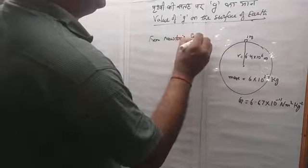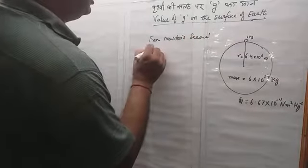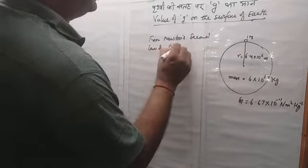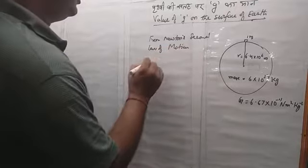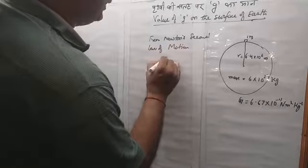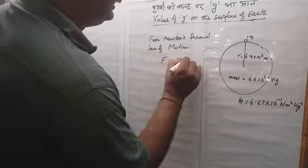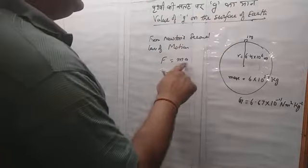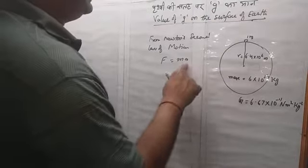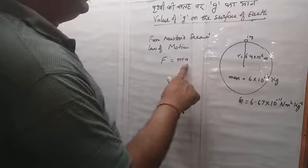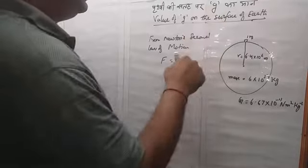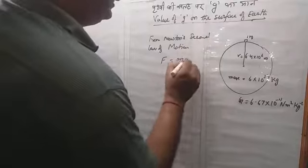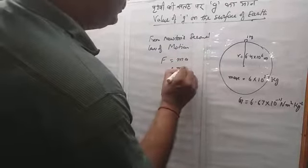We will use Newton's second law of motion. Newton's second law of motion gives us F = ma, where a is the acceleration — specifically linear acceleration. With respect to Earth, this becomes F = mg.